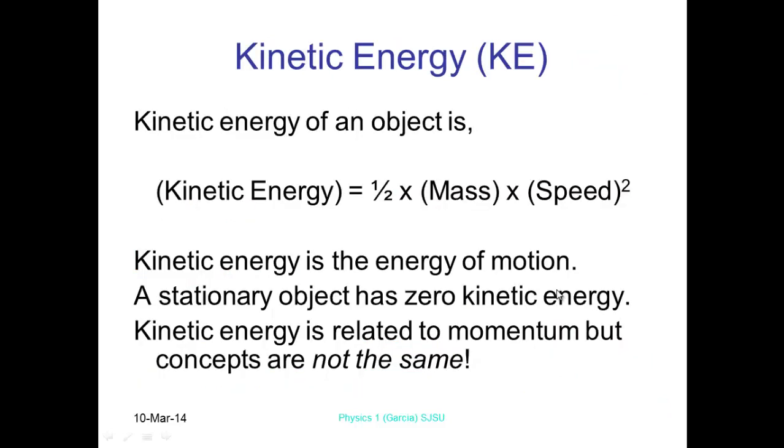So therefore, the other thing that we're going to be talking about is kinetic energy. So kinetic energy is half mass times by the speed or the velocity squared. And kinetic energy is going to be obviously zero when it's stationary.